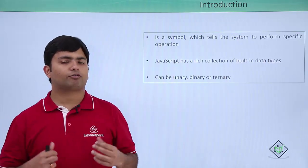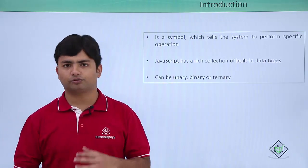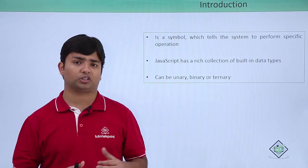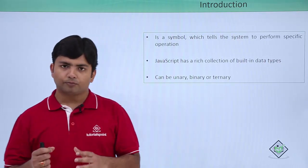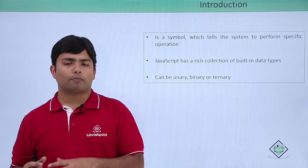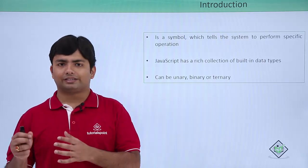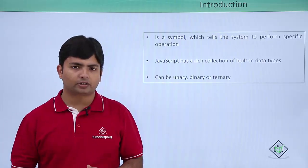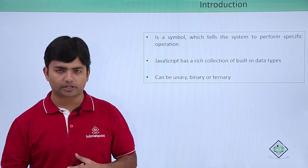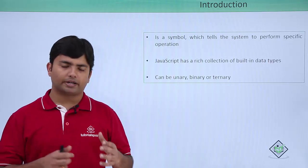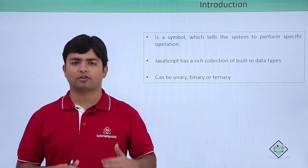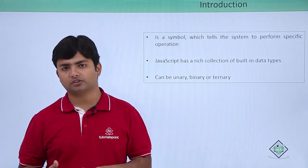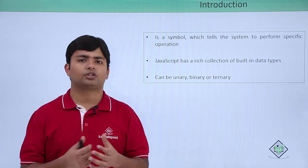In JavaScript we have a vast list of operators, and using individual operators we can perform specific tasks. On the basis of operands, these operators can be classified as unary operators meaning a single operand, binary operators meaning operators having two operands, or ternary operators meaning operators having three operands.